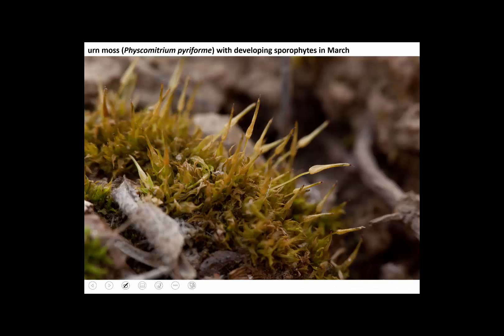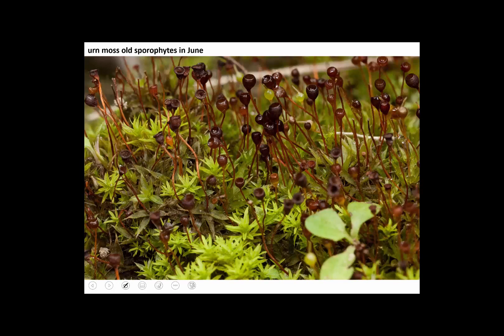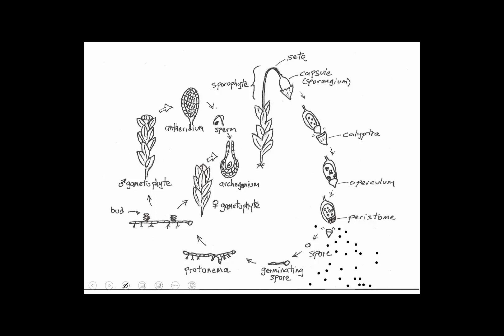The sporophyte is actually the offspring of the gametophyte — the gametophyte is the sporophyte's mother. A peculiarity of bryophytes is that the sporophyte is nutritionally dependent on its mother and never leaves home. The gametophyte is the dominant stage in the life cycle, and the sporophyte is permanently attached to the gametophyte. Here's a picture of a moss producing sporophytes in March — they've gotten pretty big, and a month later they're very plump and about to release their spores.